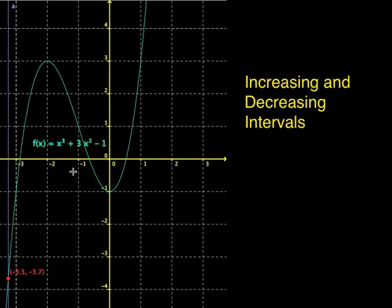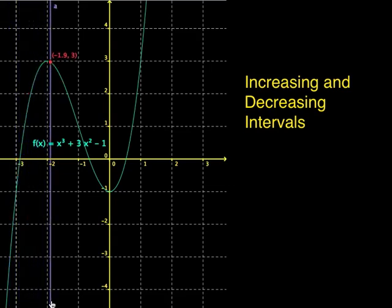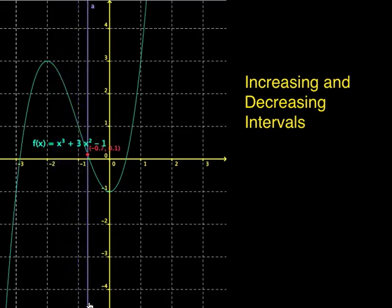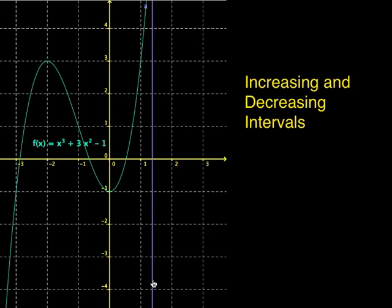So let's take a look at this function, which is x cubed plus 3x squared minus 1. And the red dot will indicate the value of the function at each point. So if we trace from left to right, we see that the function is increasing, then it turns and goes decreasing, and then it starts increasing again.